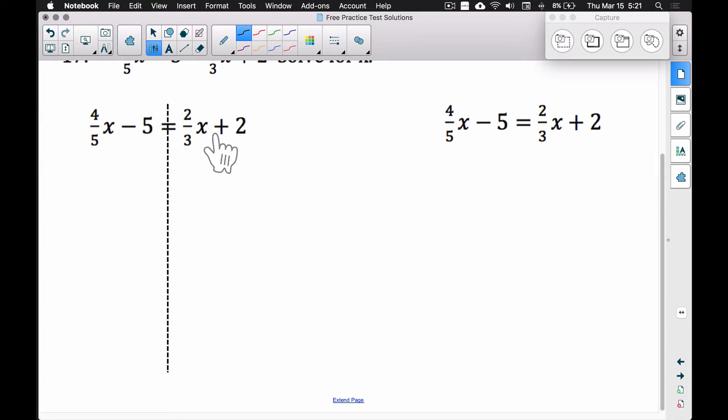The first way I'm going to show you is where we just go ahead and move the X over to one side. Notice we do have an X over here and an X over here. I'm going to subtract two-thirds X from both sides. When we subtract two-thirds X from both sides, it cancels out over here. Now we have to subtract these two fractions and find a common denominator to combine these like terms.